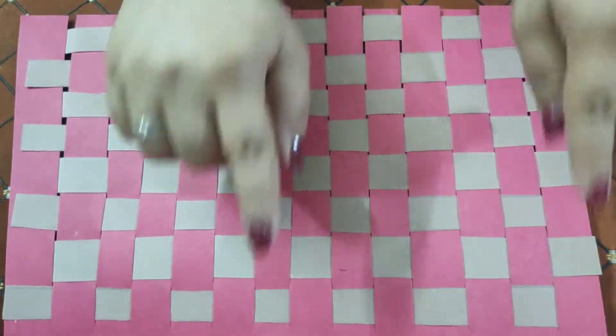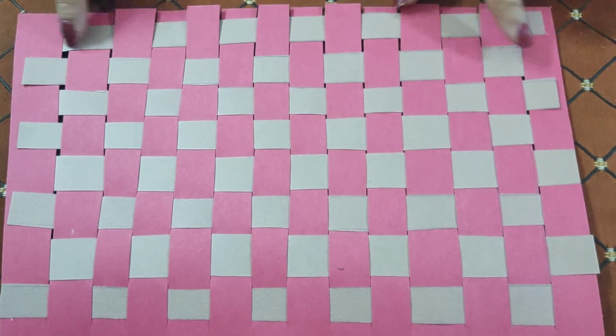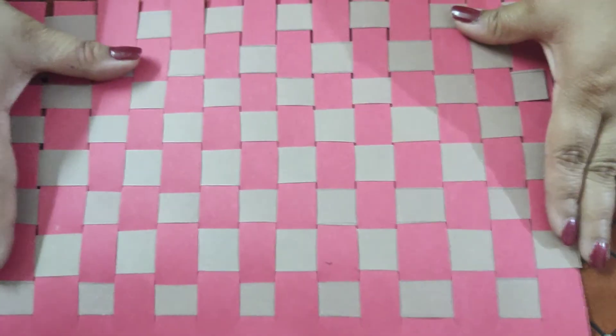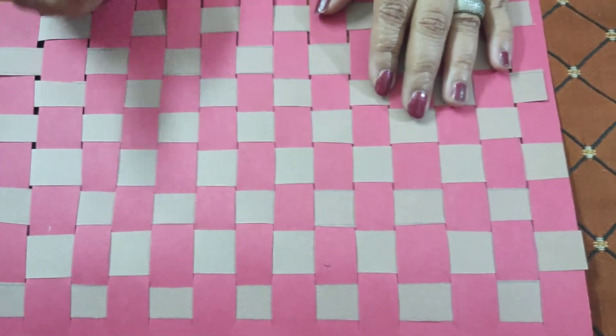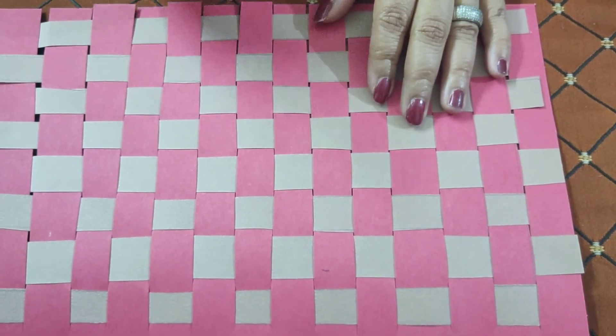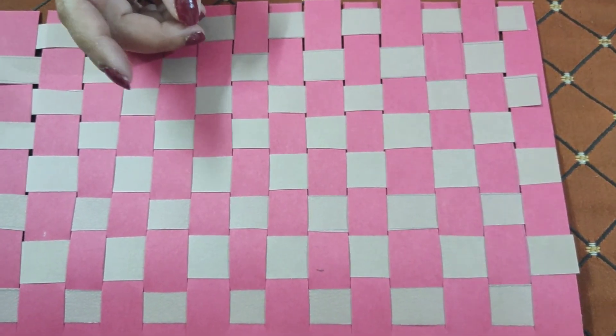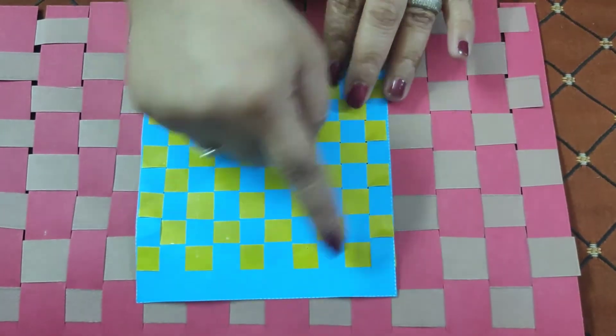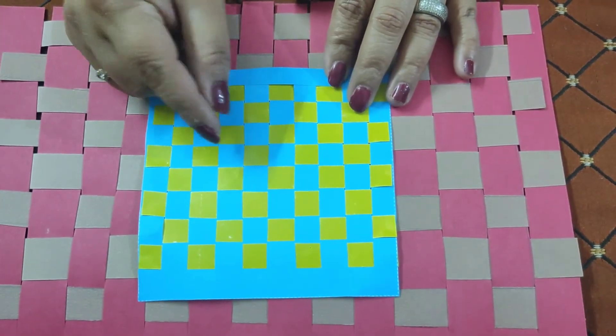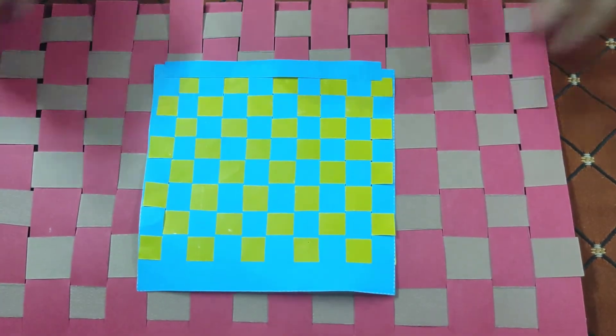Once the project is complete, it will look like this. You can get this mat laminated and it looks wonderful. You can make it for your tables or make smaller mats that work as coasters.